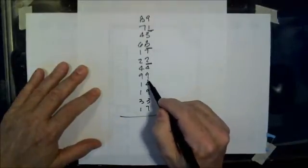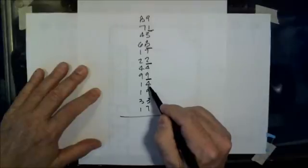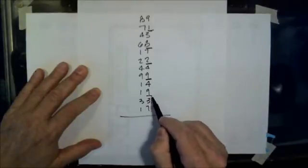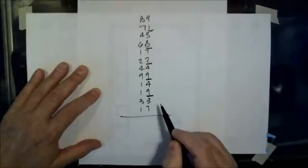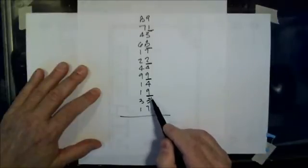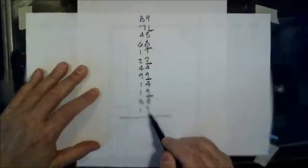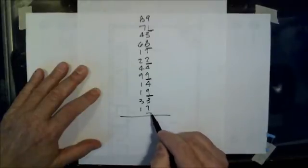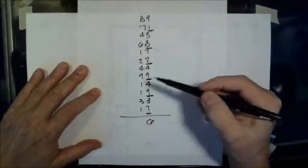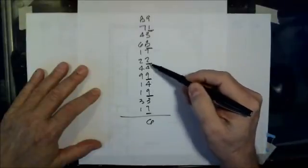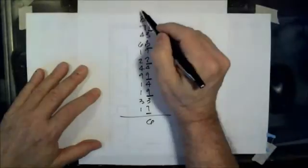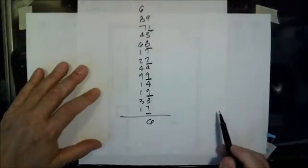Carry the 0. 4 plus 9 is 13. Carry the 3. 4 and 3 is 7 plus 9 is 16. Carry the 6. 6 plus 3 is 9 plus 7 is 16. So you put a 6 here. And you count up your dashes. 1, 2, 3, 4, 5, 6 dashes. So you carry 6 to the other column.